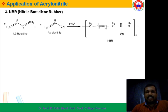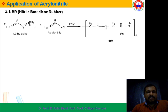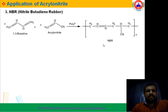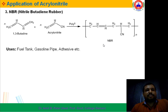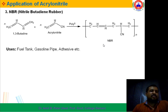The repeating unit is CH2-CH=CH-CH2 bonded to CH2-CHCN. It is known as NBR. Its uses include fuel tanks, gasoline pipes, and it can also be used as an adhesive.